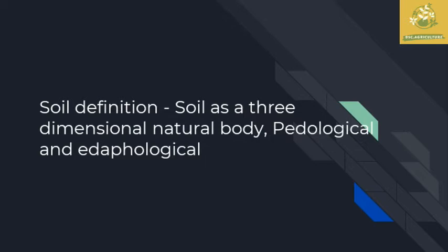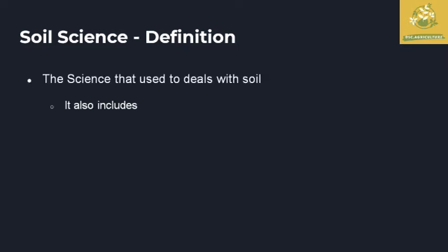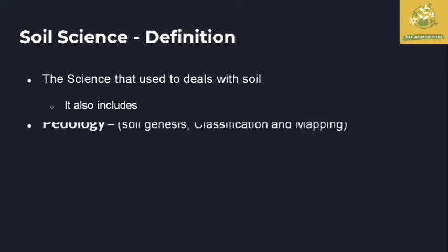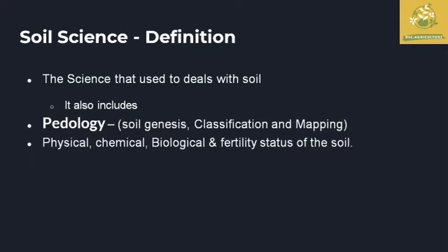In soil science, I am going to give the definition for soil science based on my aspects. Soil science is the science which deals with soil, and it also includes pedology, which covers soil genesis, classification, as well as mapping of resources, and the physical, chemical, biological, as well as fertility status of the soil.